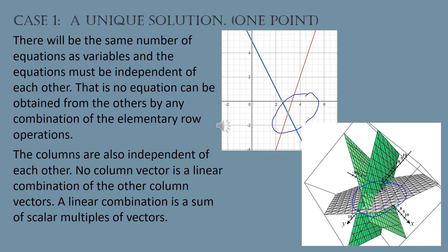So what we're really talking about is: if you start off with the same number of equations as variables and you have a unique solution, those equations will be independent of each other. Also, the columns will be independent of each other — meaning no column vector is a linear combination of the other column vectors. A linear combination is a sum of scalar multiples of vectors.